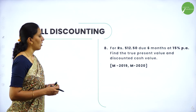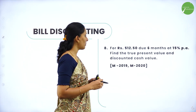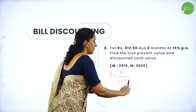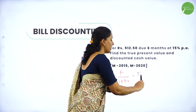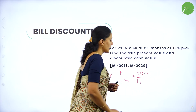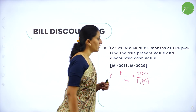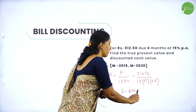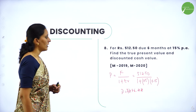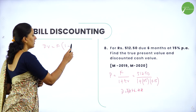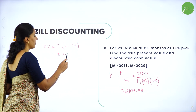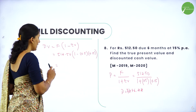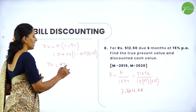Next question: For rupees 512.50 due in 6 months at 15% per annum, find the true present value and discounted value. Present value = F / (1 + TR) = 512.50 / (1 + 0.5 × 0.15) = rupees 476.44. Discounted value = F × (1 − TR) = 512.50 × (1 − 0.5 × 0.15) = rupees 474.06.